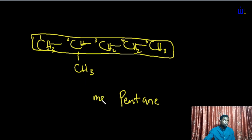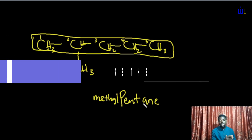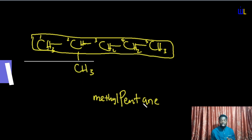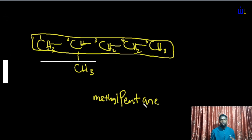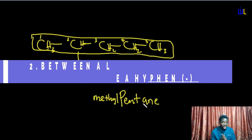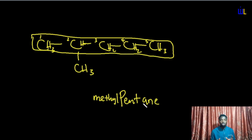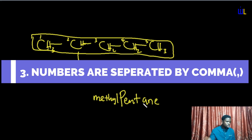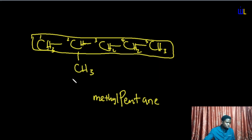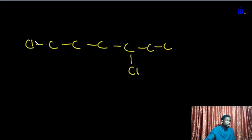An important fact about writing organic compound names: between letters there is no spacing — letters in a name are written together. However, between a letter and a number there must be a hyphen, and between two numbers you place a comma. So the locant of this methyl substituent is two, and the full name is written as 2-methylpentane.